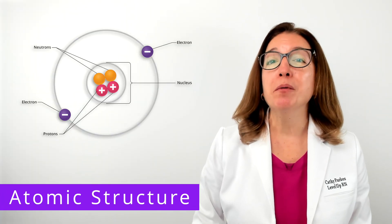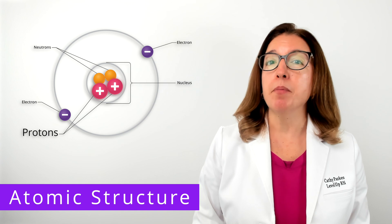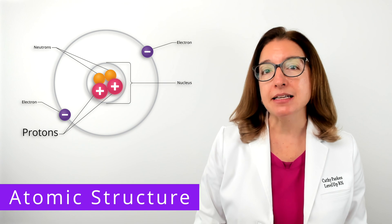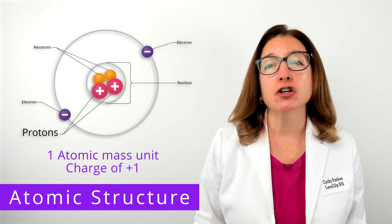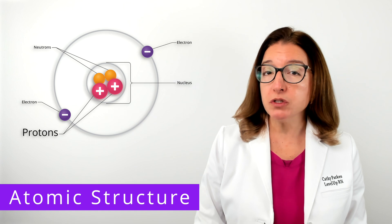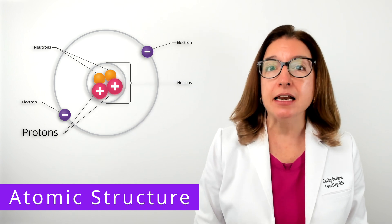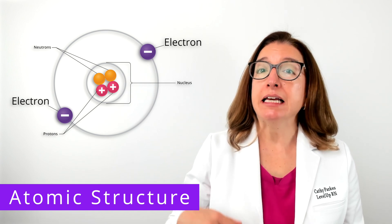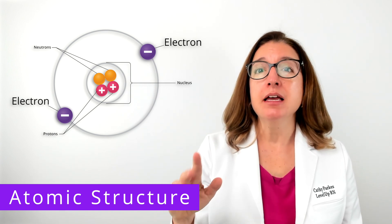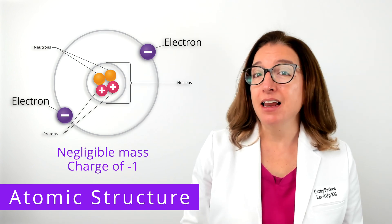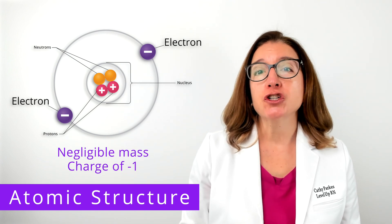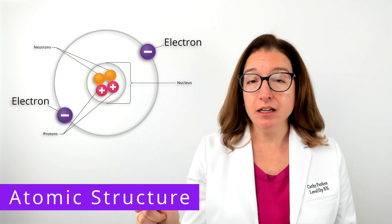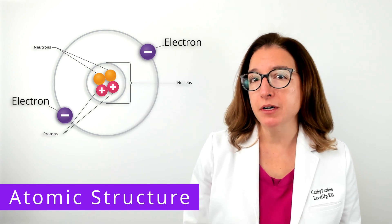Let's first review the components of an atom. A proton is a positively charged particle located in the nucleus of the atom. It has a mass of one atomic mass unit and a charge of plus one. The number of protons determines the identity of an element. An electron is a negatively charged particle found traveling in the space around the nucleus in an energy shell. An electron has a negligible mass and a charge of negative one. The number of electrons in the outermost shell, which are the valence electrons, determines the chemical properties of the atom.